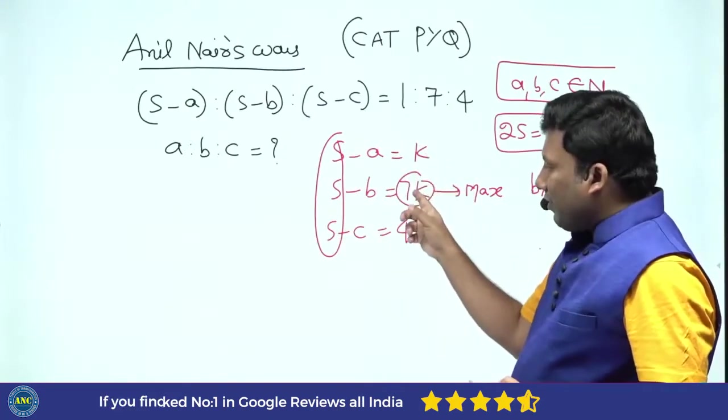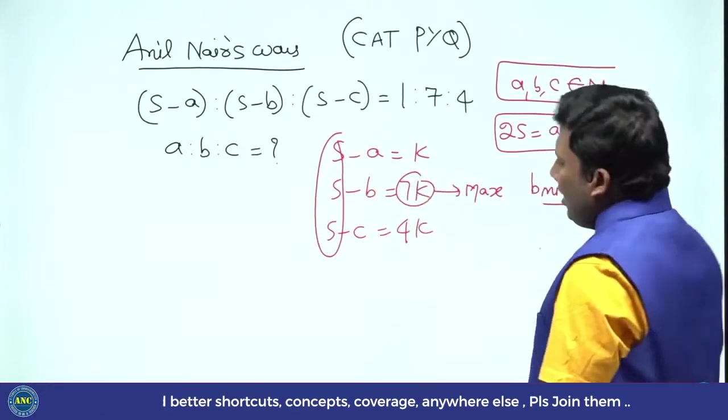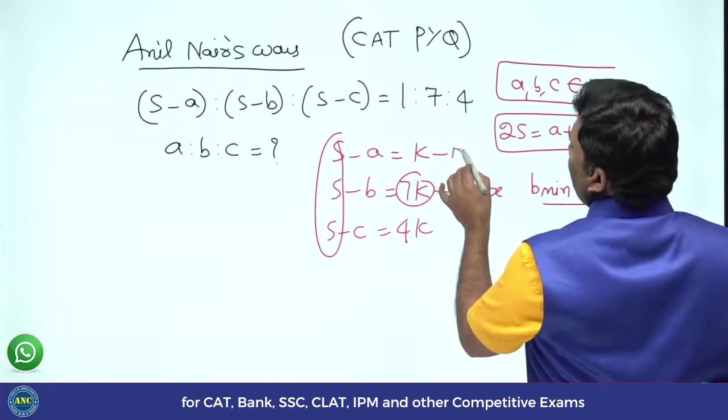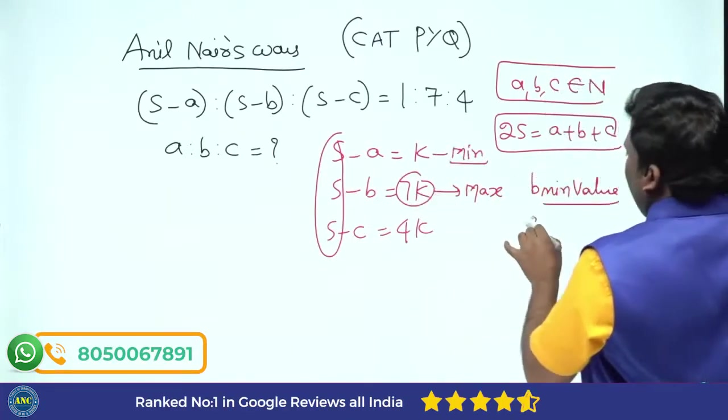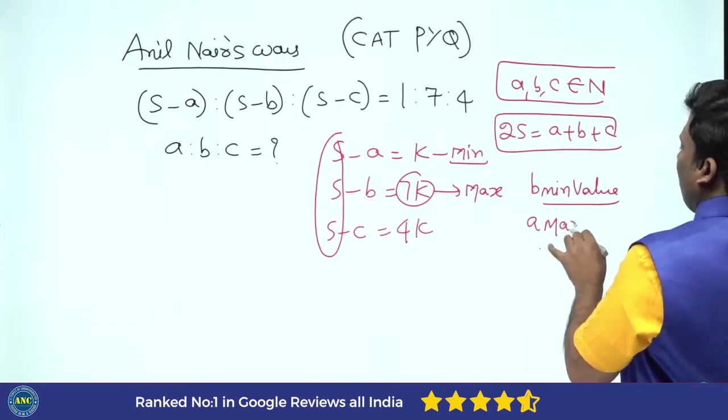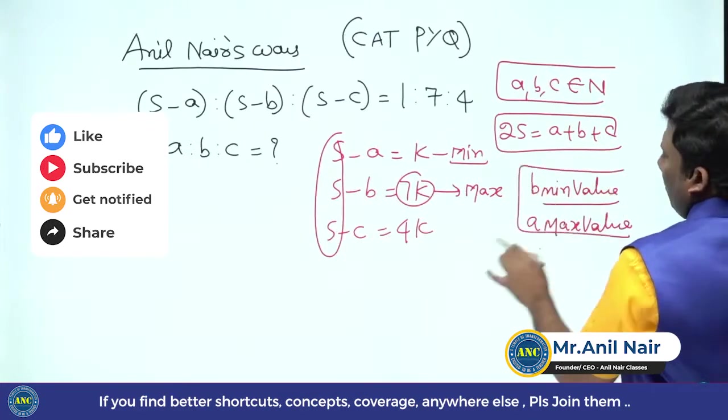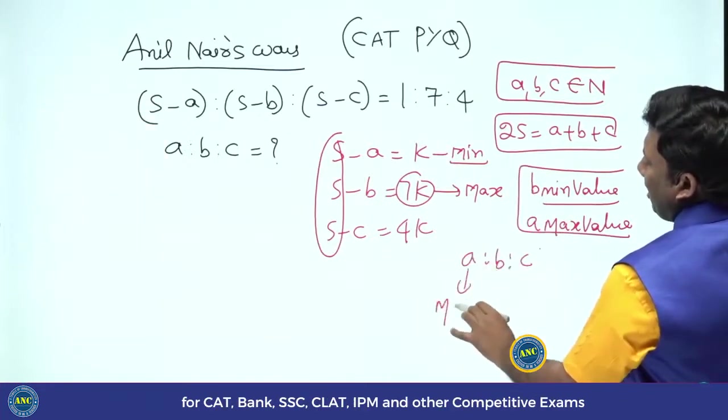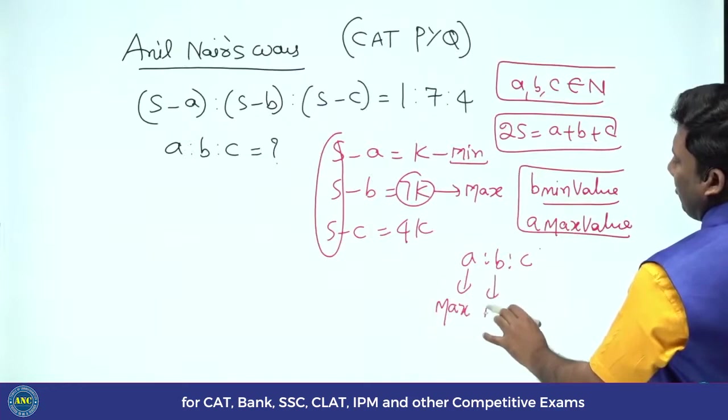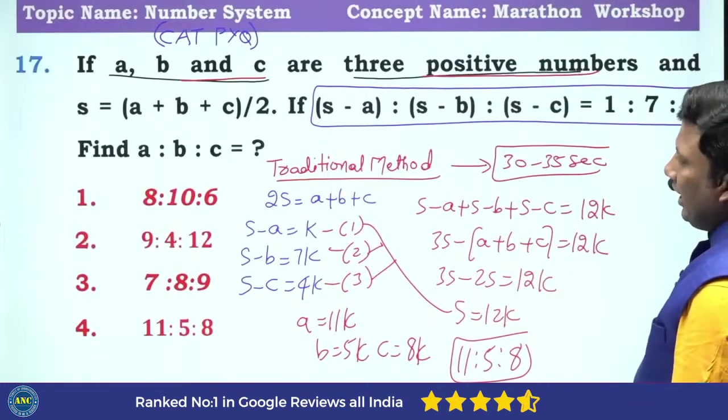S - A is equivalent to K. They are all natural numbers. So 1, 7, 4. What is the minimum? K is minimum. If this is the minimum, what should be A? A should be a maximum value. In A : B : C, which one should take maximum? A should take maximum. B should take minimum. Go back to the question. A should take maximum.